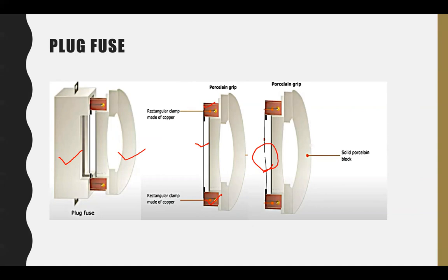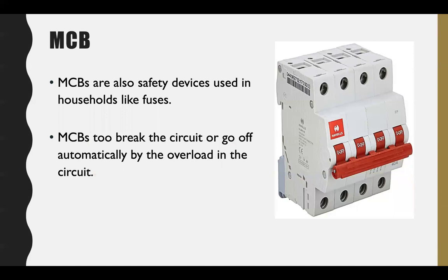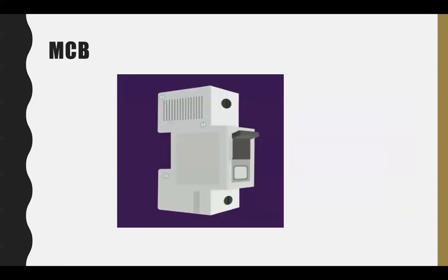To overcome this problem, nowadays we are using MCBs—miniature circuit breakers. These are also safety devices like fuse. The MCB breaks the circuit by switching off automatically when there is overload in the circuit. When there is any short circuit, the switch will come to off position automatically, breaking the circuit and stopping the flow of electricity.